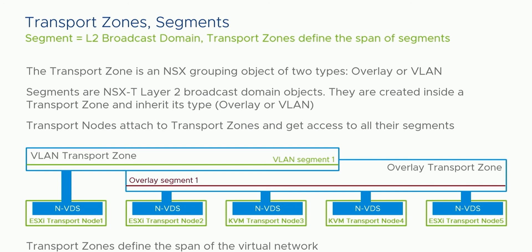On the other hand, transport node 2 is attached to both the VLAN transport zone and the overlay transport zone. When you look at the networking tab in vCenter for that node, you will see two segments — one from the VLAN transport zone and one from the overlay transport zone. Now you can see what it means to be attached to a transport zone.